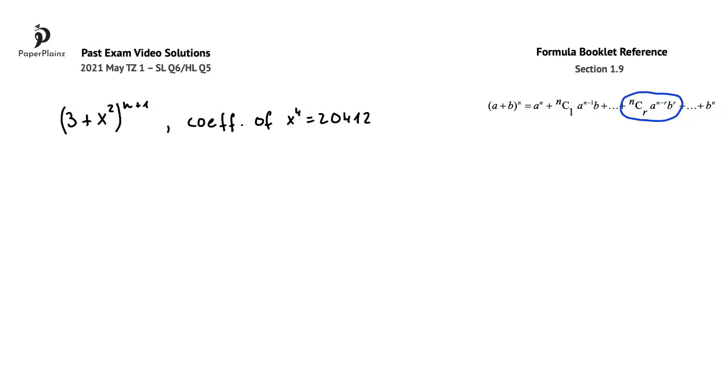The first key thing that we have to figure out is the value of r that will give us the x to the power of 4 term in the expansion. Let's use the formula that we circled on the right hand side and complete it as fully as possible based on the information that is given in the question.